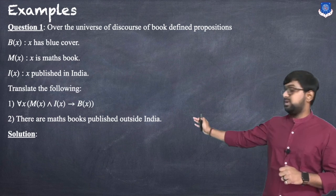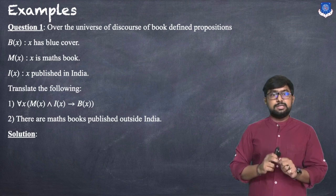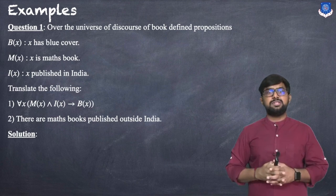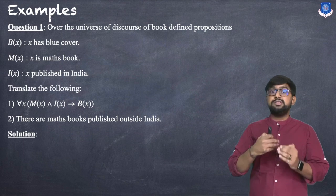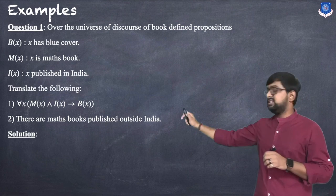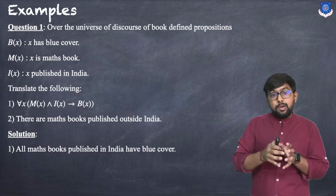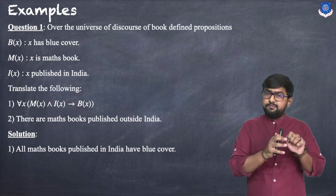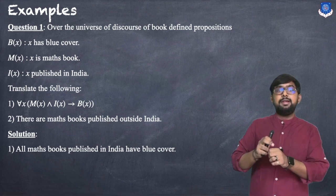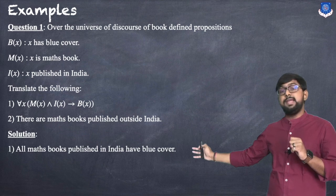For the first question, '∀x, M(x) ∧ I(x) → B(x)': M(x) is 'x is Matt's book', I(x) is 'x is published in India', and B(x) is 'x has blue color'. Combining these with the universal quantifier, the translation is: all Matt's books published in India have blue color.